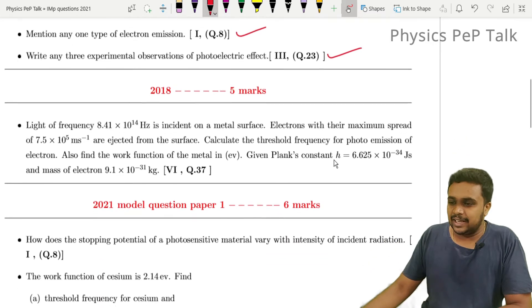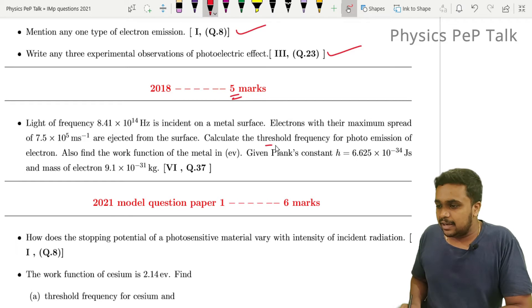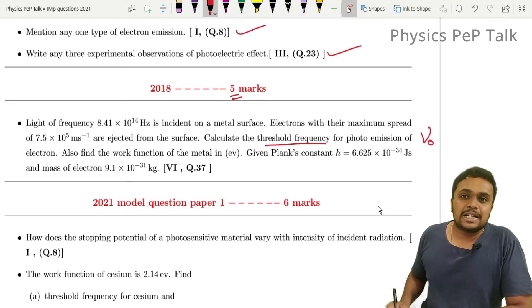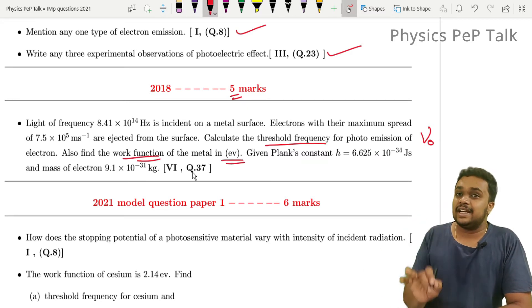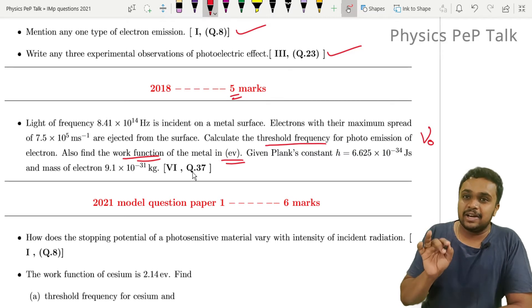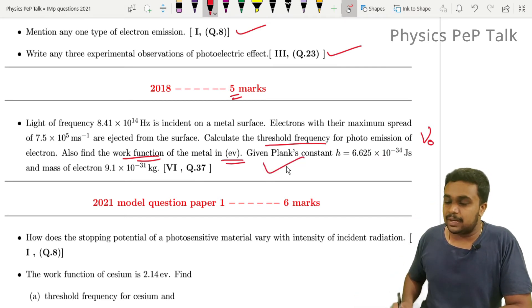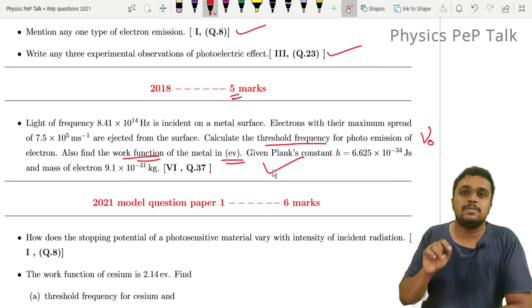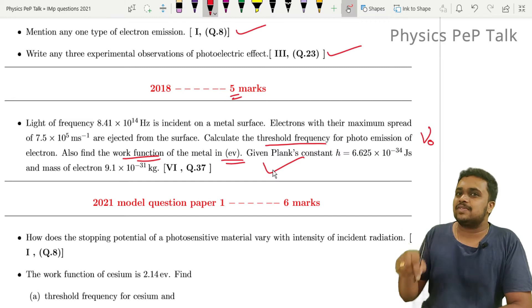2018, five marks, one numerical problem. Calculate the threshold frequency nu zero for the first part. Next, work function in electron volt. Work function is written in electron volt by dividing by 1.602 into 10 power minus 19. That gives you work function in electron volts. This is a simple problem. It is very easy to solve problems in this chapter. I prefer to solve problems from this chapter as well for this particular year.